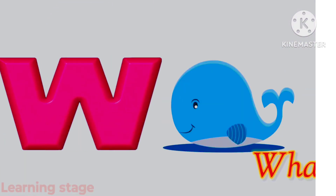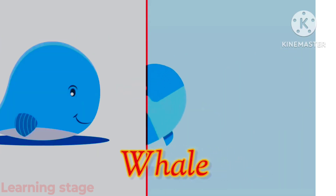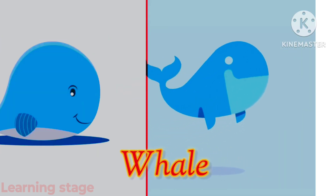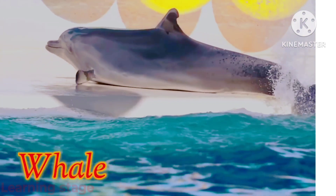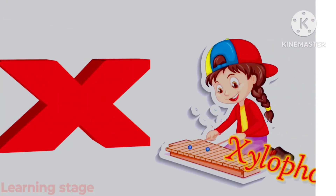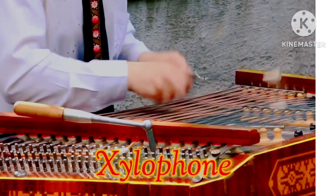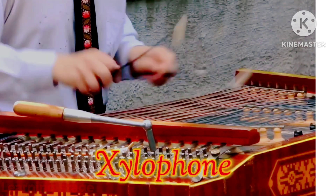W is for wagon. X is for xylophone, xylophone.